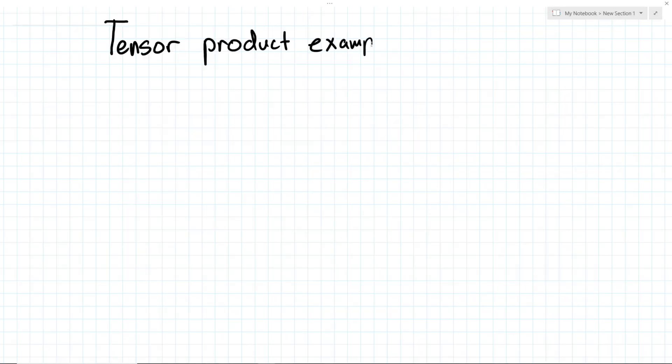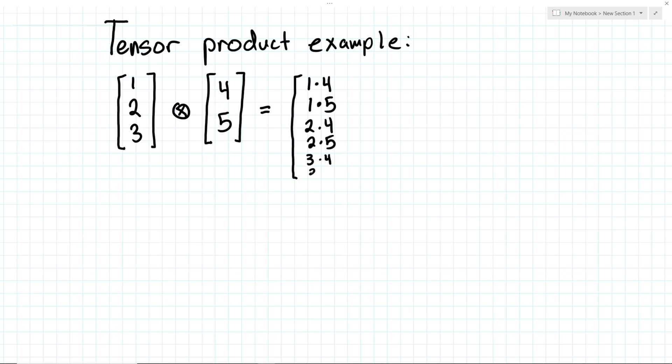Let's work through an example here. Let's say we have the vector 1, 2, 3, and we want to take its tensor product with the vector 4, 5. First, we take 1 and multiply it by every entry in the other vector, so we get 1 times 4 and 1 times 5. Then we move on to 2, we get 2 times 4 and 2 times 5. And then we move on to 3, so we get 3 times 4 and 3 times 5.